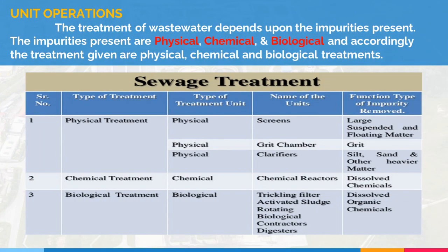Unit operations. The treatment of wastewater depends upon the impurities present. The impurities present are physical, chemical, and biological. And accordingly, the treatments given are physical, chemical, and biological treatment. Here's a table of unit operations of sewage treatment.